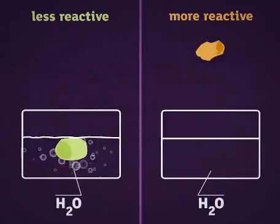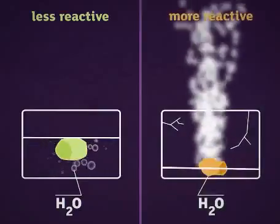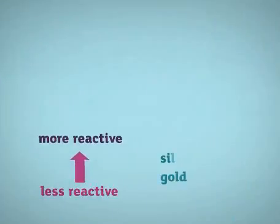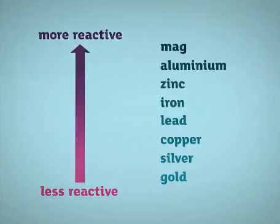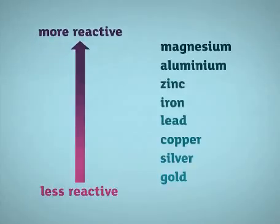Metals vary in their reactivity. Some metals react more easily than others. The reactivity series lists metals in order of how vigorously they react. For example, aluminium is more reactive than iron.